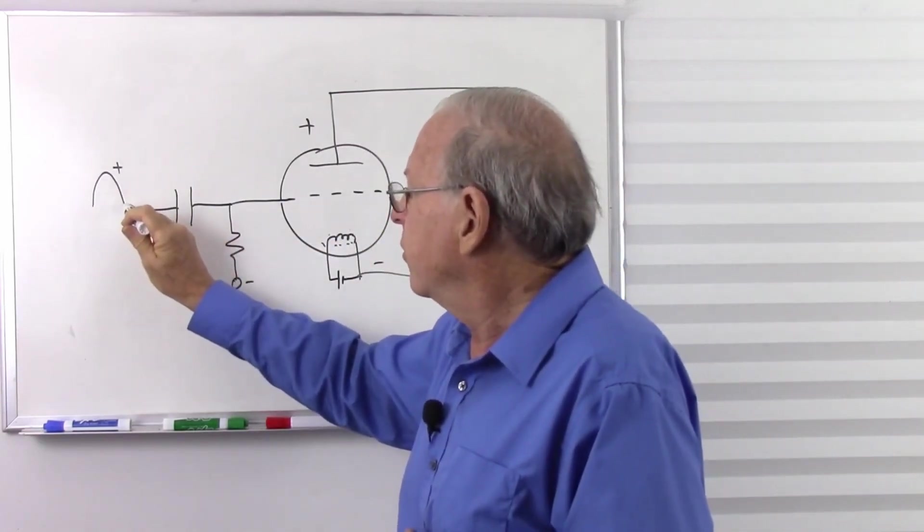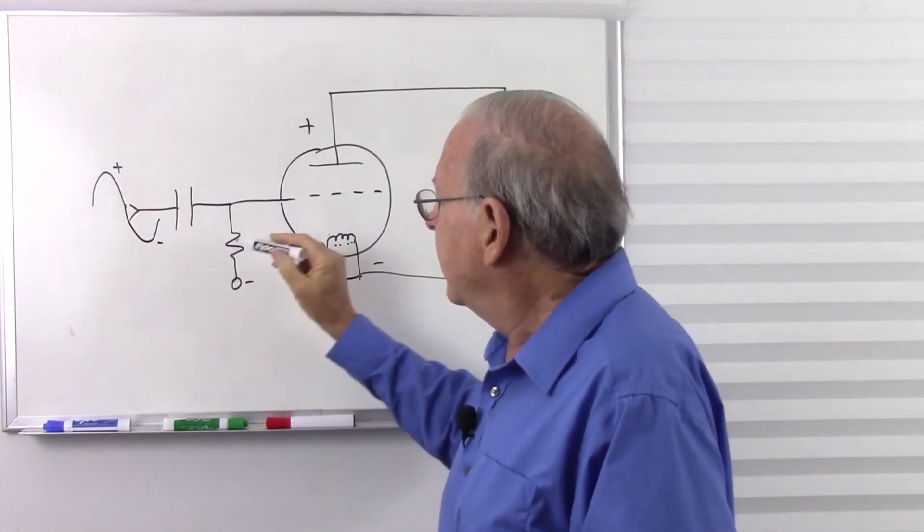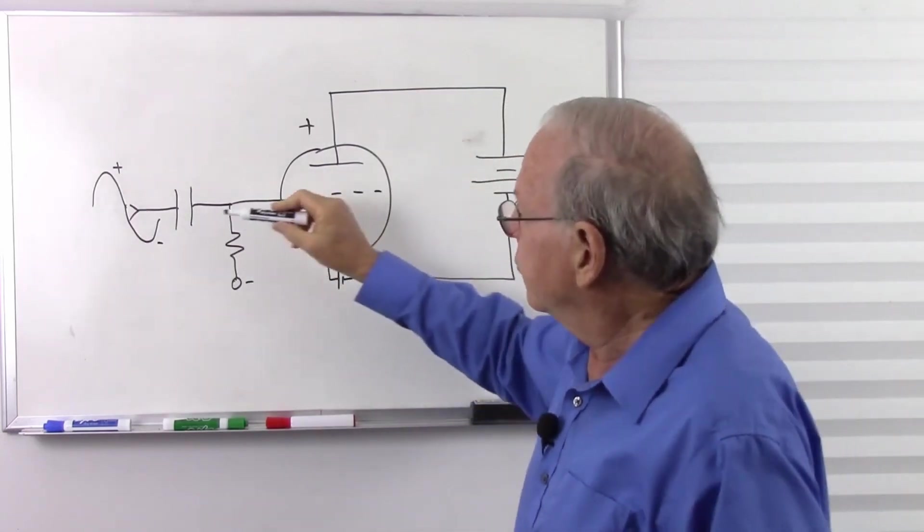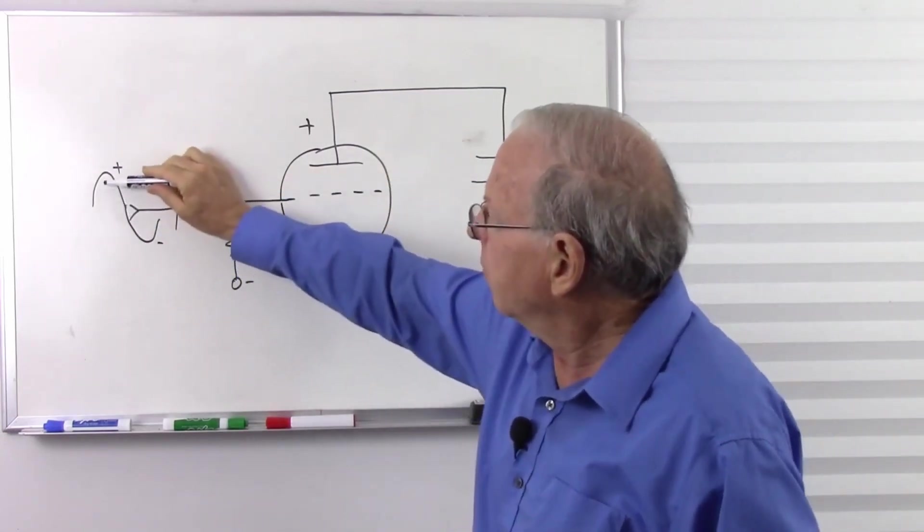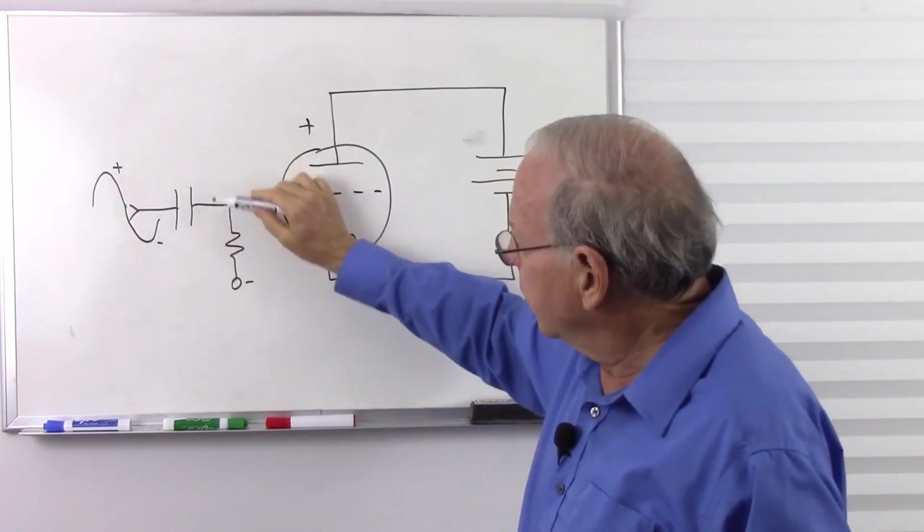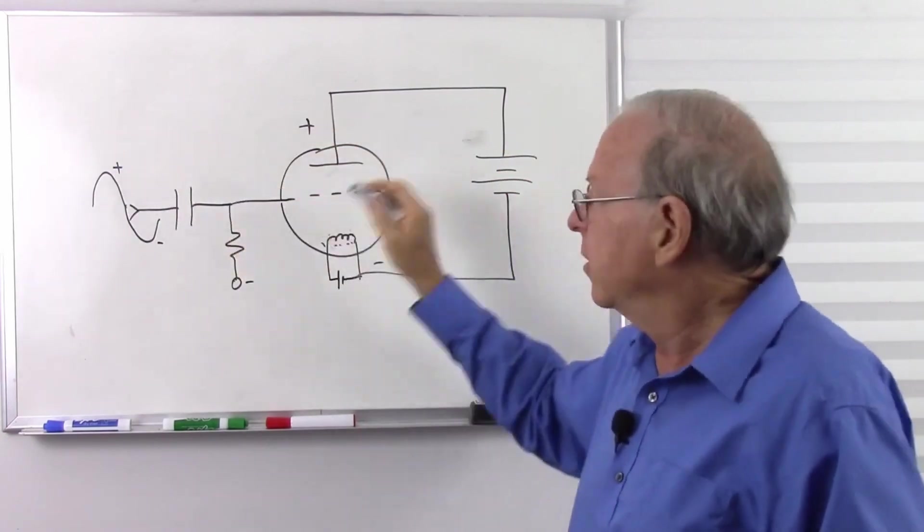And then when this goes to the negative side of its cycle, that's going to make this more negative and block the flow. So we're going to get more flow, less flow, more flow, less flow as our sine wave goes in there.